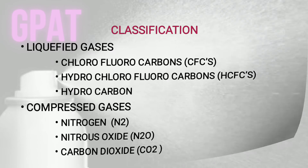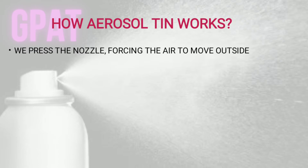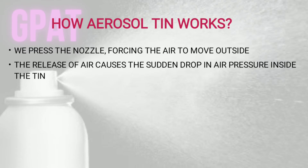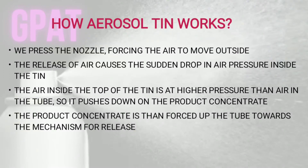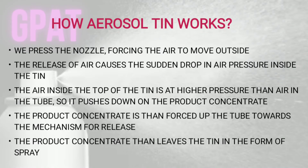Let us discuss how an aerosol tin works. When we press the nozzle, it forces air to move outside. The release of air causes a sudden drop in air pressure inside the tin. The air inside the top of the tin is at the highest pressure, and it pushes down on the product concentrate, which is then forced up the tube towards the release mechanism, leaving the tin in the form of a spray.